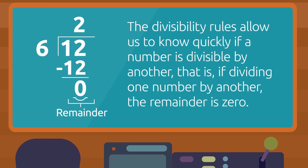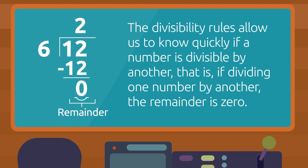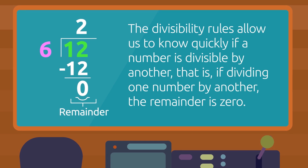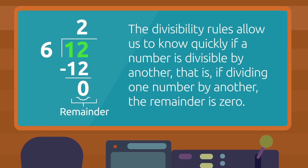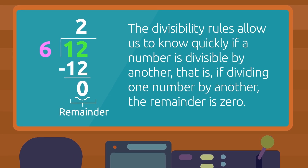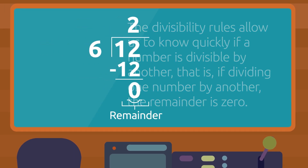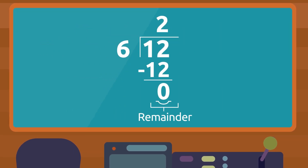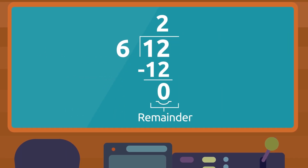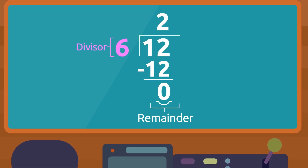The divisibility rules allow us to know quickly if a number is divisible by another — that is, if dividing one number by another, the remainder is zero. When a number is divisible by another number, the number that we have divided it by is called the divisor.